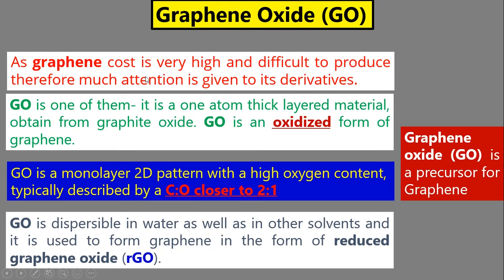Graphene's cost is very high and it is difficult to produce, so much attention is given to its derivatives — other forms where graphene is present. Graphene oxide is one of them: it is also a one-atom-thick layer material. Importantly, graphene oxide is a precursor for graphene, meaning from graphene oxide we can get graphene. Conversely, if you have graphene and combine it with oxygen, it becomes graphene oxide.